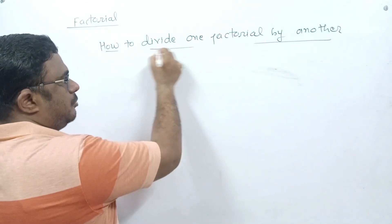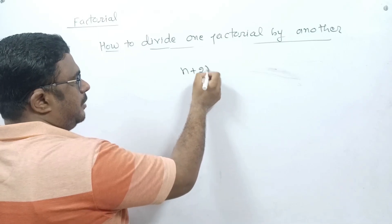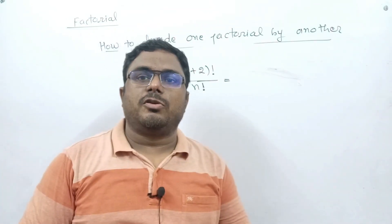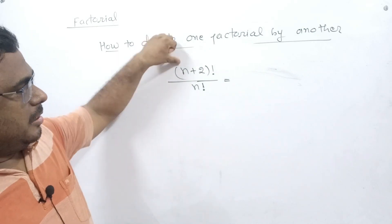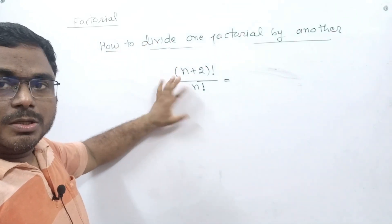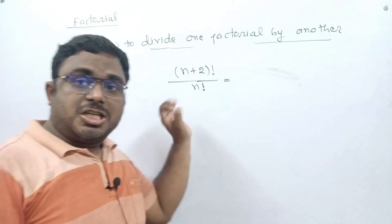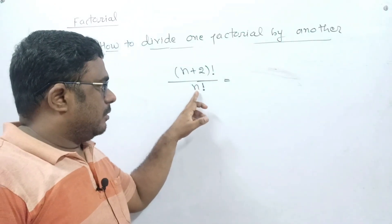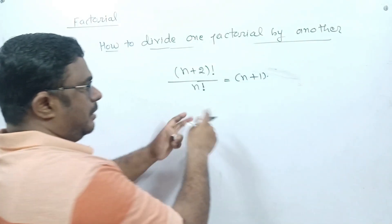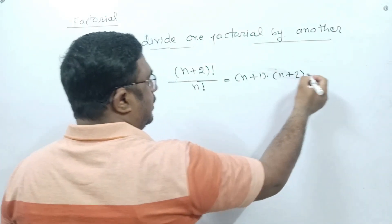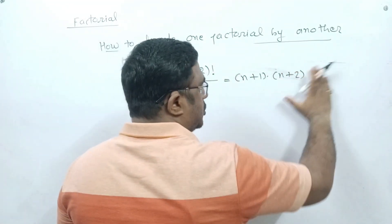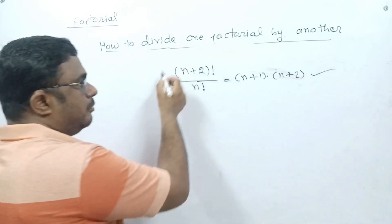Now let us take the next example: (n+2)! upon n!. First decide which is smaller and which is larger. n is smaller and n+2 is greater, so the numerator is larger. Write down the natural numbers just after n: those are n+1 and n+2. We stop at n+2 and cannot go to n+3. So the result is (n+1)(n+2).